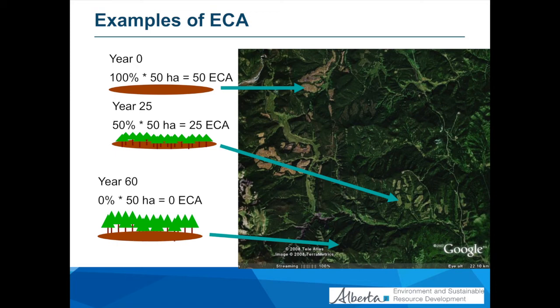To illustrate what ECA is: suppose only 50% of a watershed is harvested — the ECA is 0.5. Then say 25 years after that, 50% of the watershed has recovered, so ECA reduces to 0.25. And at year 60, suppose full recovery occurs — though recovery timelines vary by stand type. For instance, Aspen recovers after about three years, no matter how much you cut. Other stand types recover over longer periods. We use these time steps to demonstrate how the calculation is done.